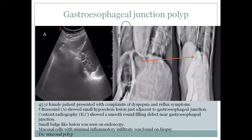A 49-year-old female patient with longstanding dyspepsia and worsening symptoms was evaluated. Ultrasound showed a hypoechoic lesion near the gastroesophageal junction. On contrast imaging, a small bowel-filling defect with mucosal changes was demonstrated, and biopsy confirmed gastric endometriosis.